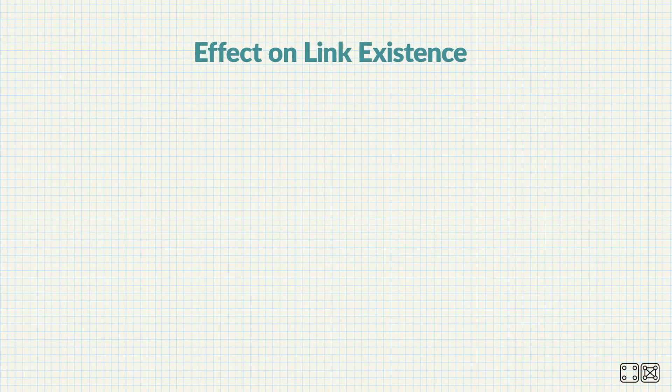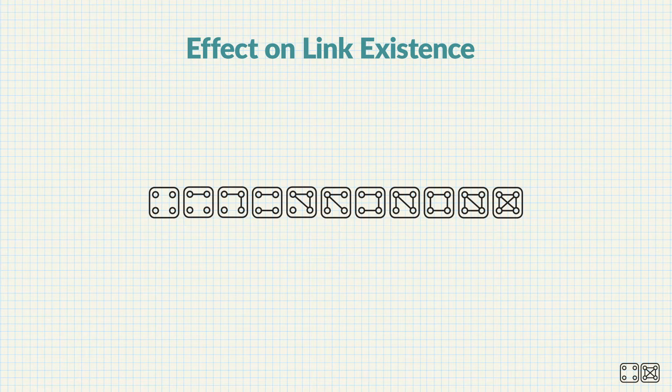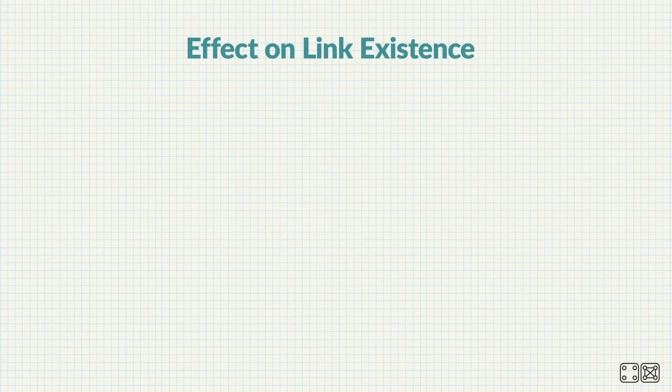Going back to Alice and Bob — we know that Alice and Bob are connected in the network. Their four mutual friends form a common neighborhood with one of the following 11 structures in the network.